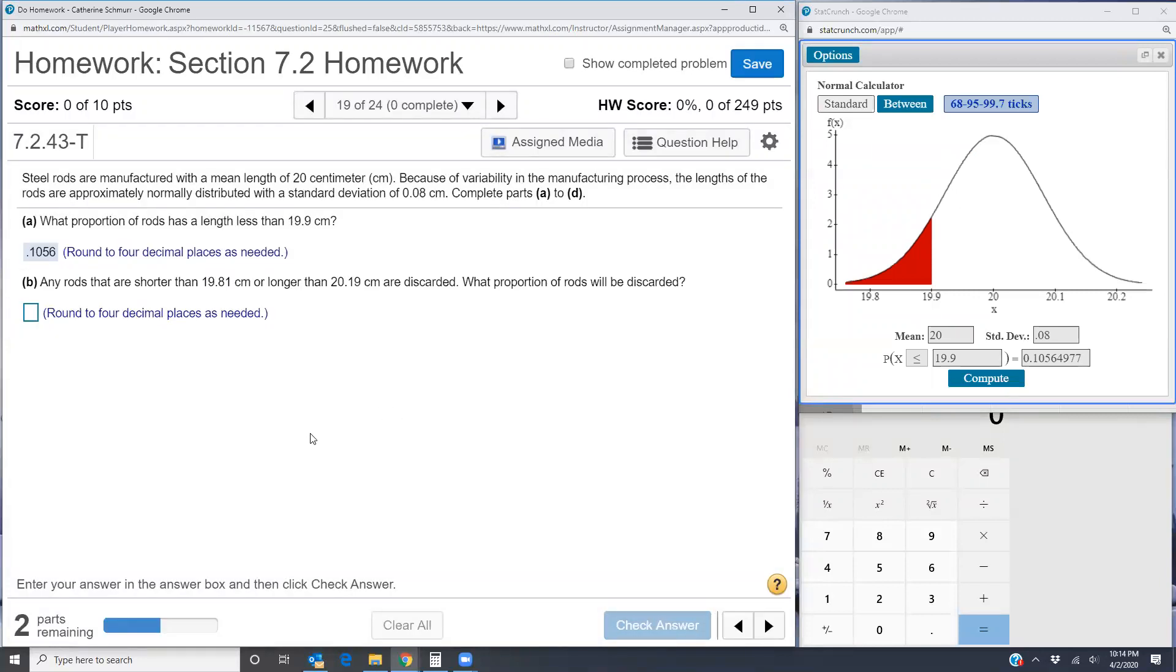Now we're told that any rods that are shorter than 19.81 centimeters or longer than 20.19 centimeters are discarded. What proportion of rods will be discarded?